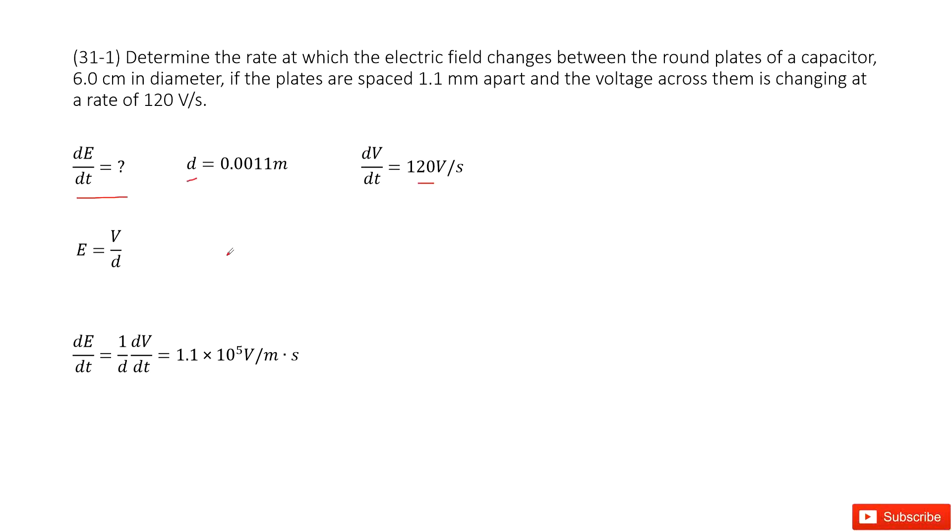And this is very straightforward. As we know the electric field E should equal to voltage divided by the distance d. Now you can see from this equation, we do the derivation at both sides with time t. So we can say dE over dt is 1 over d times dV over dt.